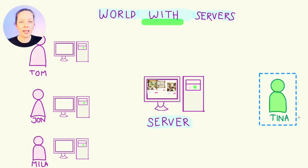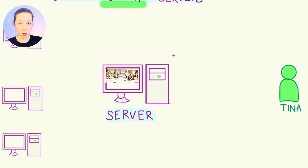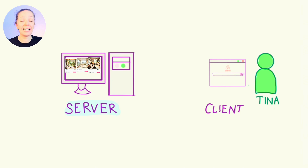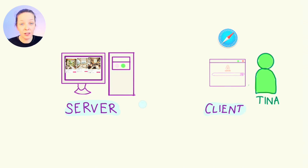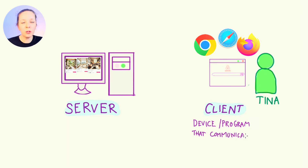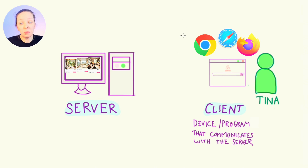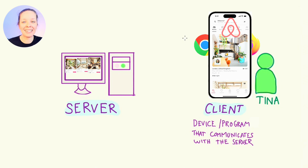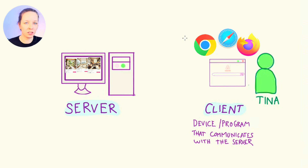But simply knowing the address is not enough. Tina also needs a way to talk to the server, and this is where the client comes in. For Tina, her web browser — like Safari, Chrome, or Firefox — acts as a client. A client is any device or program that communicates with a server. It could also be the Airbnb app. But let's say she uses Safari and let's see this in action.